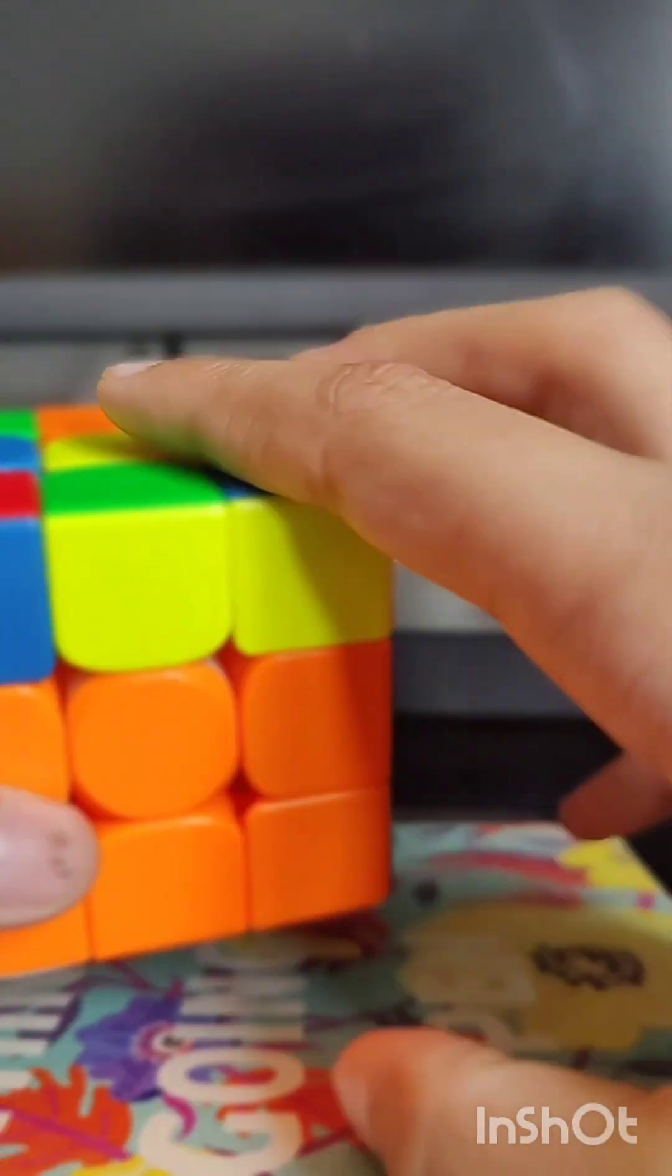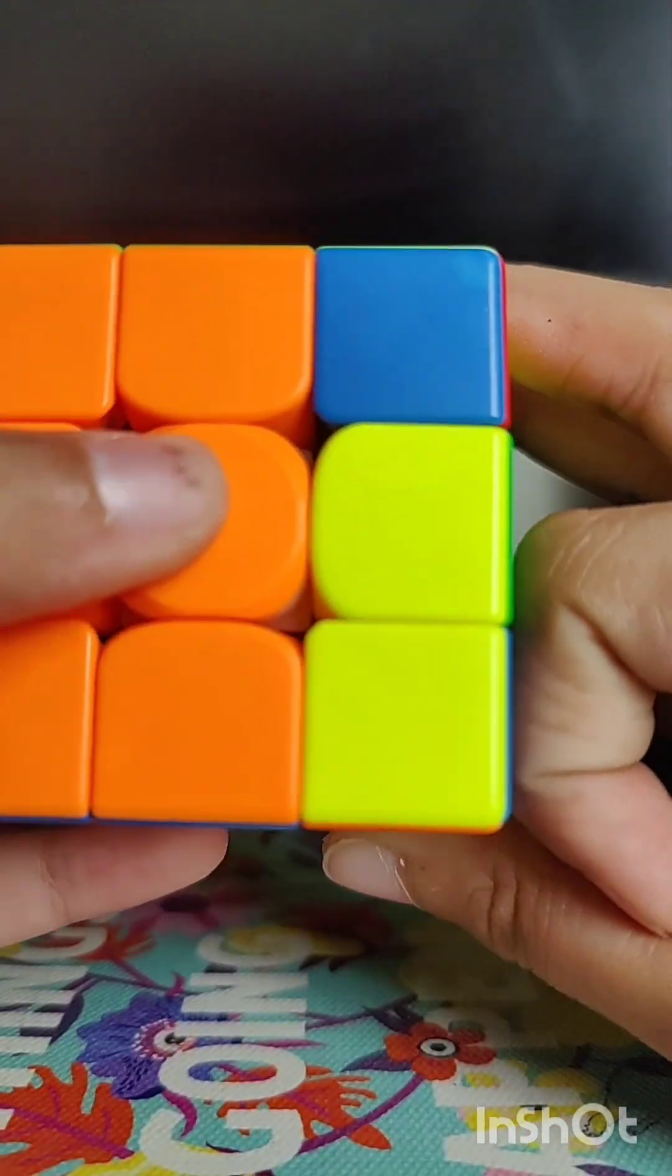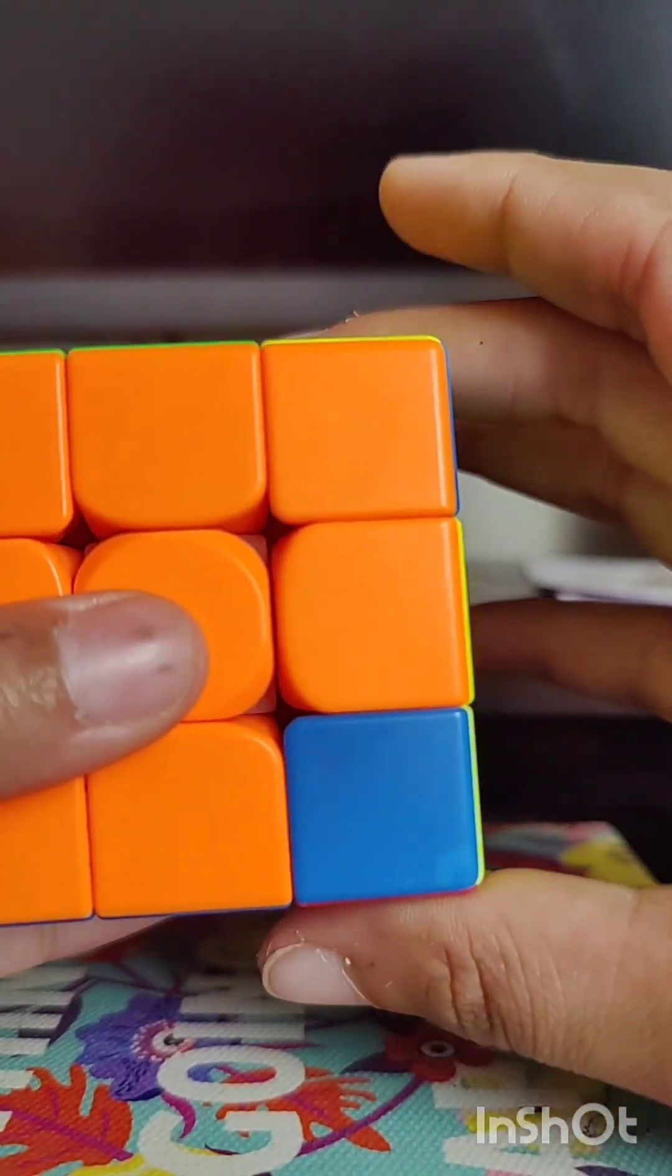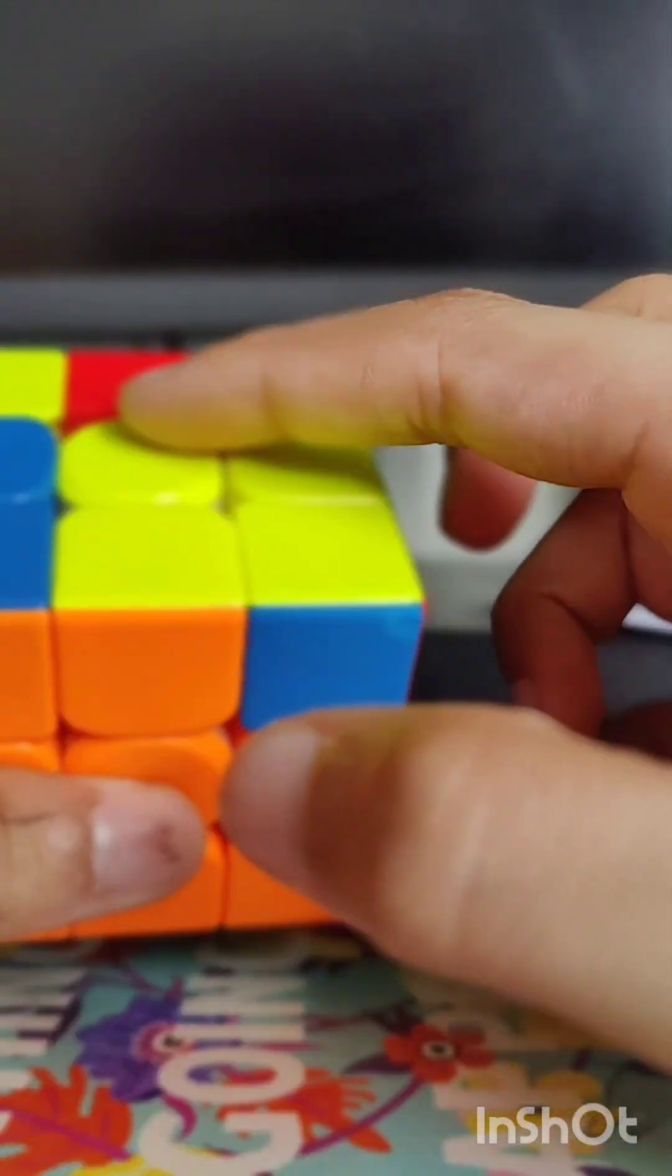First step we got to do is make the yellow cross. So if you just have a dot here, you have to do the righty algorithm.